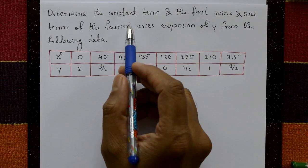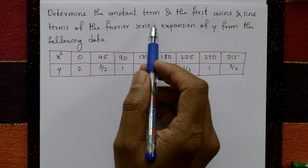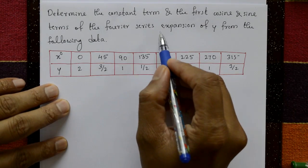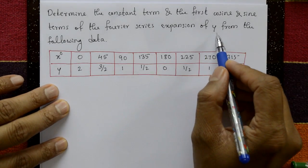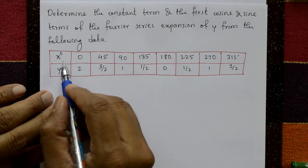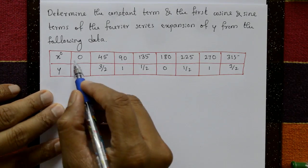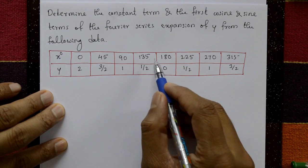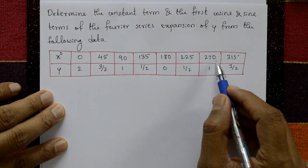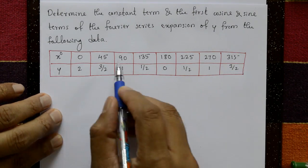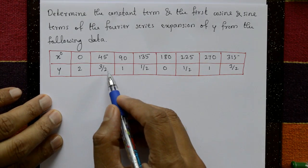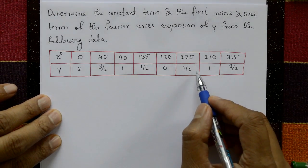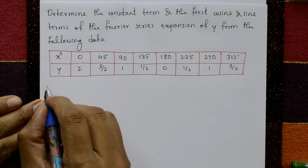Determine the constant term and the first cosine and sine terms of the Fourier series expansion of y from the following data. x in degrees: 0, 45, 90, 135, 180, 225, 270, 315. And y is: 2, 3/2, 1, 1/2, 0, 1/2, 1, 3/2.